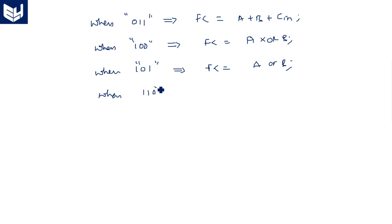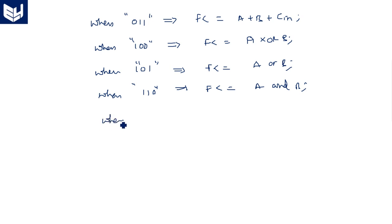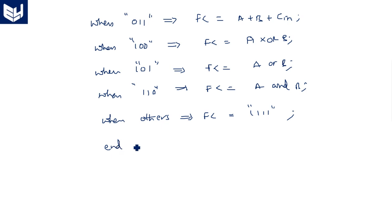For the remaining cases: when "101", F is assigned with A OR B. When "110", F is assigned with A AND B. The last case must be written as when others — F is assigned with all ones, "1111". End case. End process.